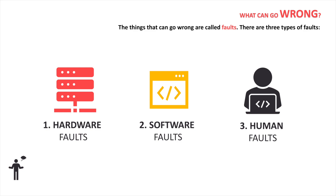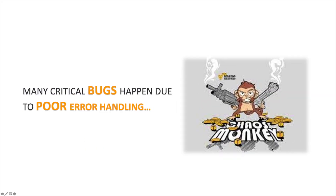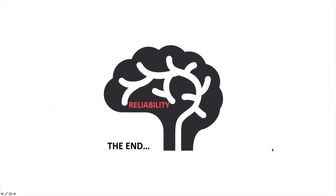Before we end, I want to mention one more thing. Many critical bugs happen due to poor error handling. To increase confidence that faults will be handled correctly, many companies started deliberately inducing faults to ensure that fault-tolerance machinery is continually exercised and tested. Chaos Monkey, from Netflix, is a great example of this approach.